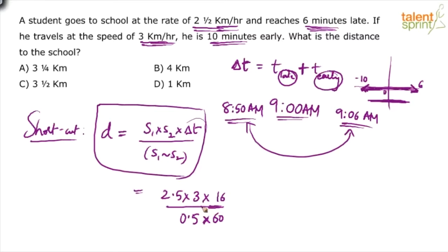Now calculate. 0.5 goes 5 times; 5 × 3 is 15; 15 goes 4 times; 16 ÷ 4 is 4. Four kilometers is your answer - option B.